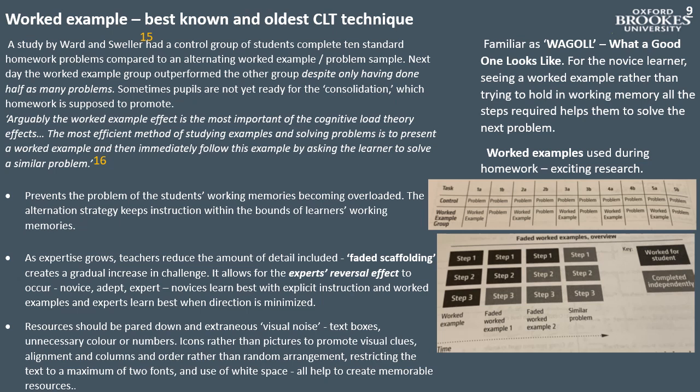Faded scaffolding allows for the expert reversal effect to occur: novice, adept, expert. Novices learn best with explicit instruction and worked examples, and experts learn best when direction is minimised. In terms of resources, the focus on freeing up the learner's working memory means that resources should be pared down and extraneous visual noise removed — for example, unnecessary text boxes, colour which serves no purpose, distracted images and fussy fonts. Icons rather than pictures to promote visual clues, alignment and columns in order rather than random arrangement, restricting text to a maximum of two fonts, and a lot of white space can all serve to create a memorable and clutter-free resource.